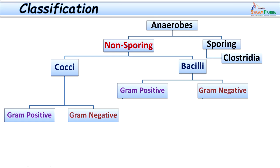Let us consider how anaerobes are classified. There are a large number of species of anaerobic bacteria. They have been classified according to Gram stain nature and depending on whether they are spore-forming or non-spore forming. Anaerobes are basically classified into non-spore forming and spore-forming anaerobic bacteria. The spore-forming ones are beyond the purview of today's class. Let us consider the non-sporing anaerobic bacteria.